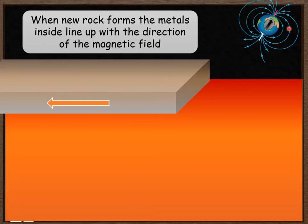So those two things are the key pieces of information. New rock is formed when molten rock solidifies and the Earth's magnetic field switches direction every 100,000 to a million years.